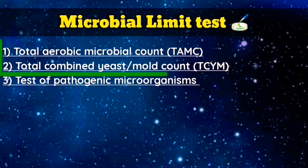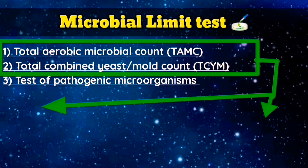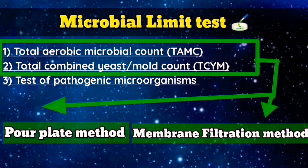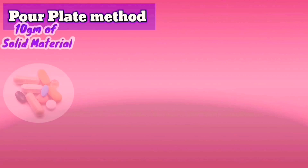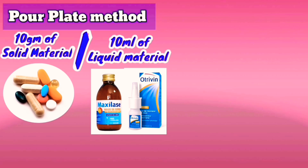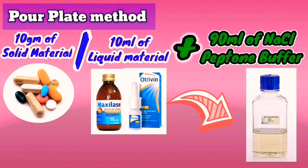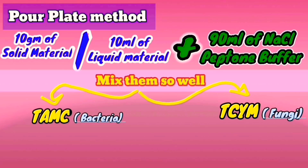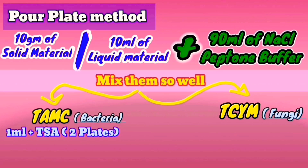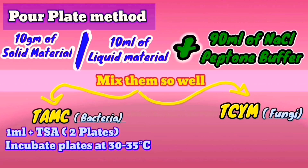Total aerobic microbial count and total combined yeast and mold count can be performed by pour plate method or membrane filtration method. For the pour plate method, take 10 grams of solid material or 10 ml of liquid material, then transfer it into 90 ml of sterile sodium chloride peptone buffer and mix well. For detecting total aerobic microbial count, add 1 ml of diluted buffer into a sterile petri dish, then add sterile tryptone soybean agar media and incubate plates at 30 to 35 degrees Celsius for 3 to 5 days.